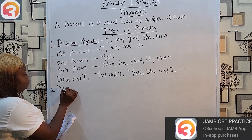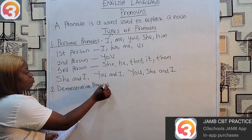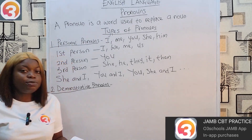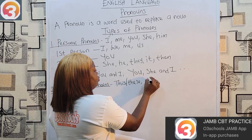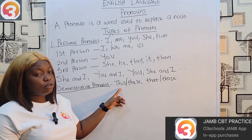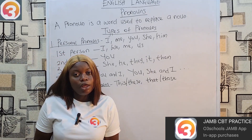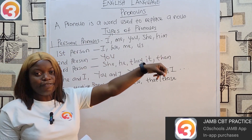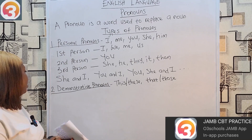Next: demonstrative pronouns. These pronouns indicate closeness or distance from the speaker. If it is close, you have 'this' for singular and 'these' for plural. If it is distant, you have 'that' for singular and 'those' for plural. For example: 'This is my bag' — the bag is close to me. 'That is my father' — my father is distant.